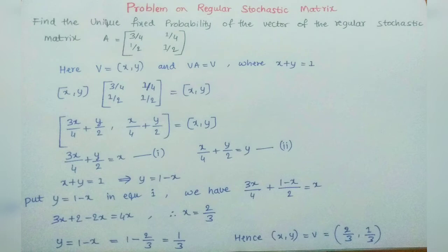Now matrix multiplication, row into column: 3x/4 plus y/2 is the first element, x/4 plus y/2 is the second element, which equals (x, y).